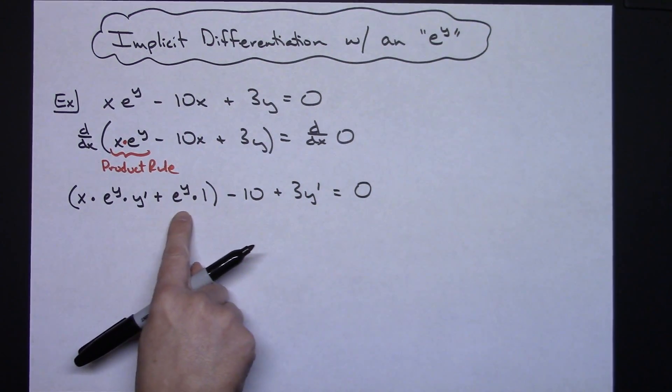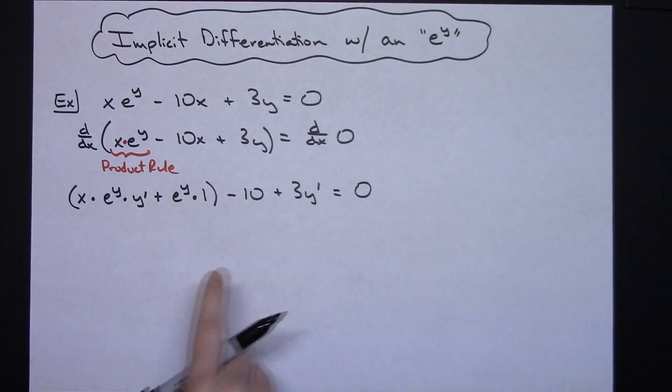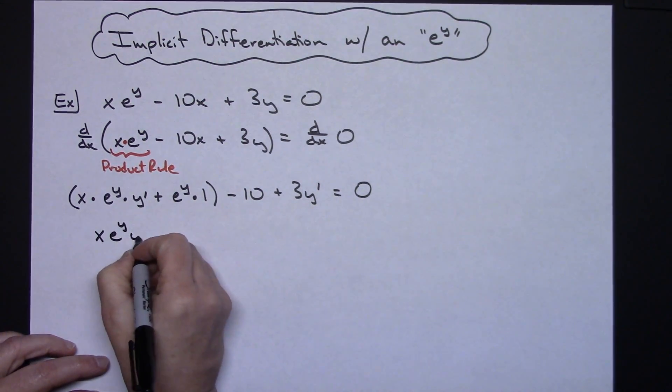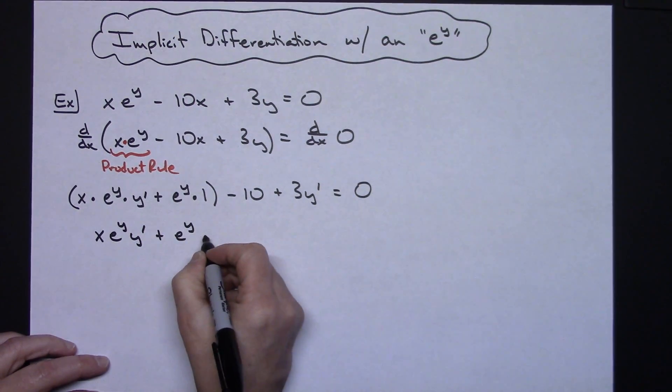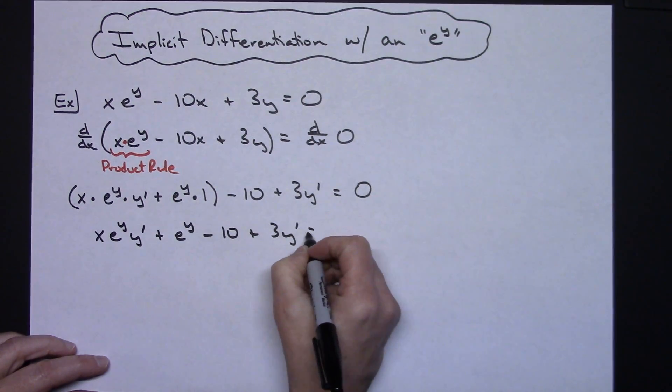Now for this, let's clean some of this up, get rid of the 1, get rid of the dots, and then we will attempt to solve for y prime here. So x e raised to the y, y prime, plus e raised to the y, minus the 10, plus the 3, y prime, equals 0.